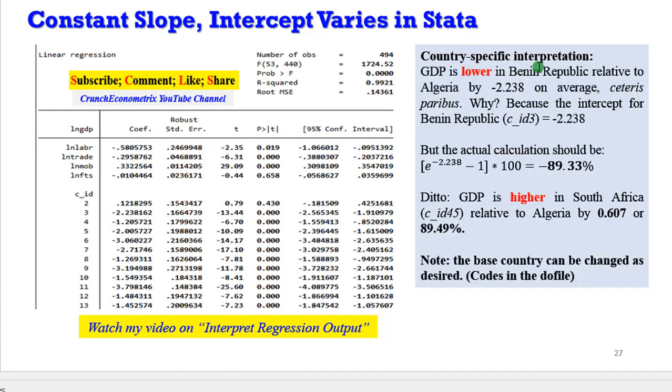Now let's look at some country specific interpretation. The GDP in Benin Republic is lower relative to Algeria according to this data by minus 2.238. This is because the code for Benin Republic is 3. But to obtain the actual calculation as detailed in Wooldridge's textbook, you take the exponents of the coefficient, deduct one from it, and multiply by 100. That gives you the actual differential between the intercepts of the two countries.